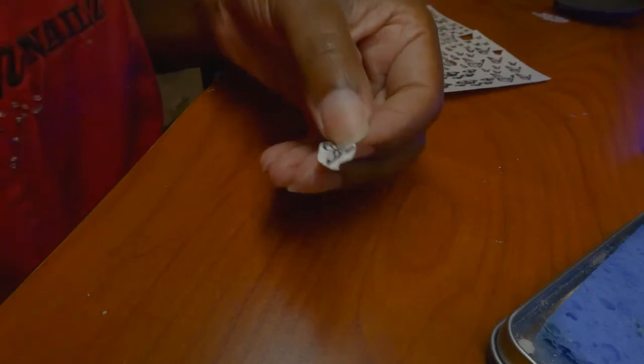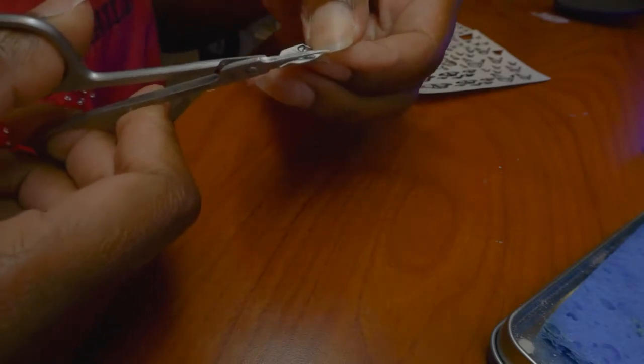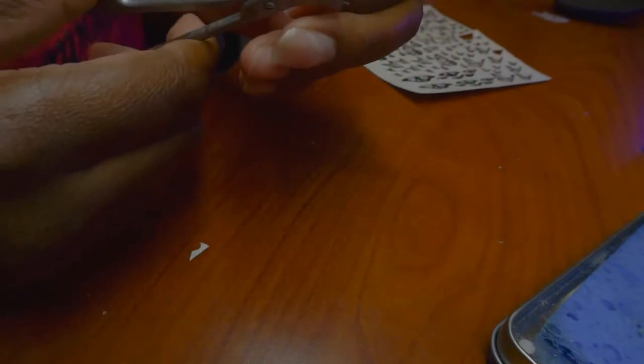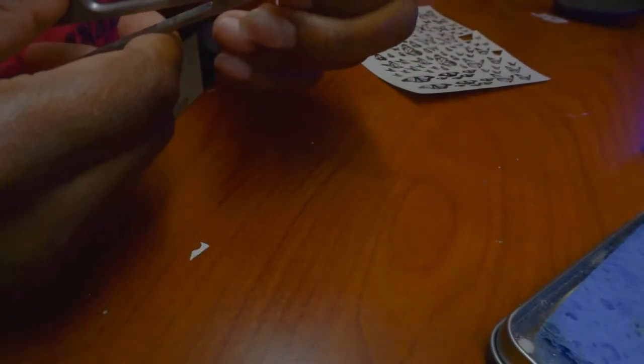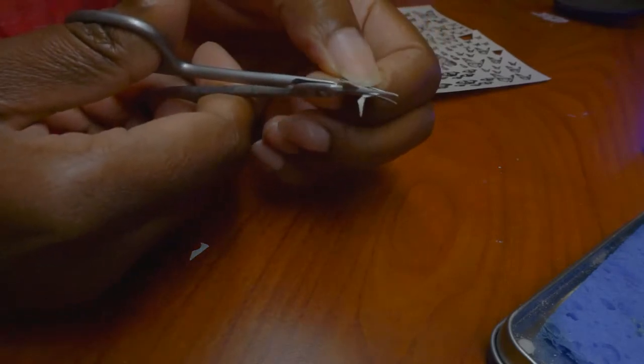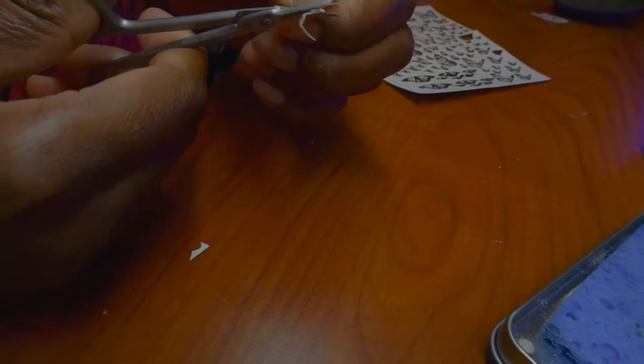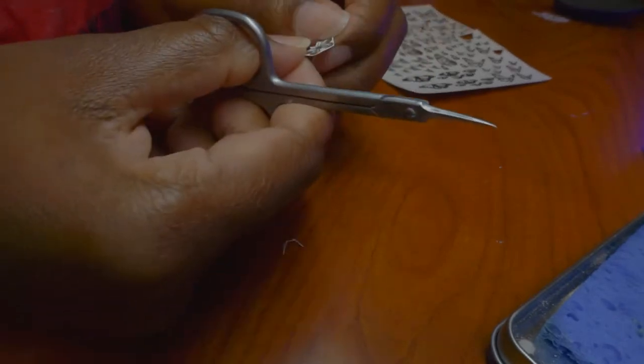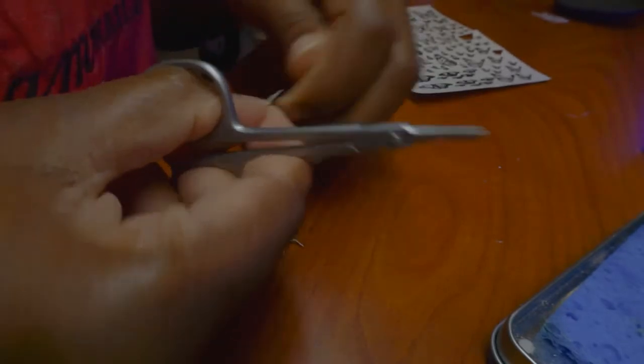While that's curing in our lamp, I'm going to go ahead and cut a little bit more around the decal. Decals are very easy to use. This butterfly is going to give you a cool holographic look. You can cut them out beforehand or you can cut them out on clients' nails before you put it on their nails.